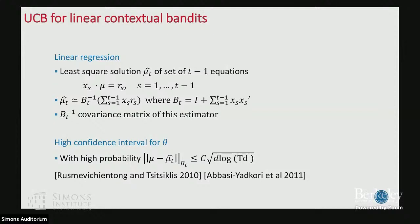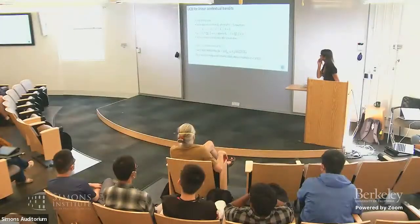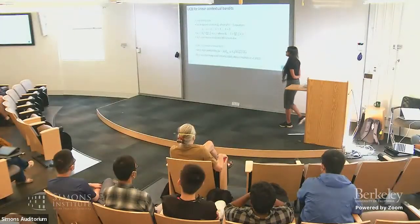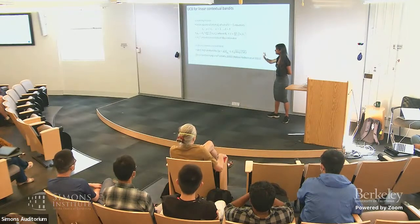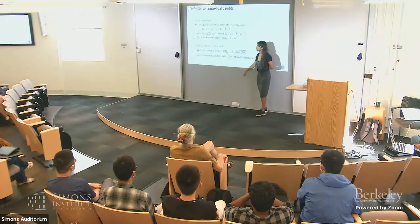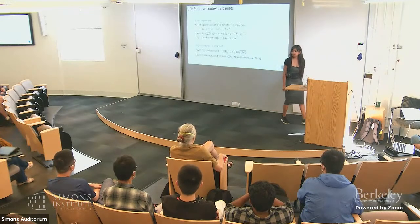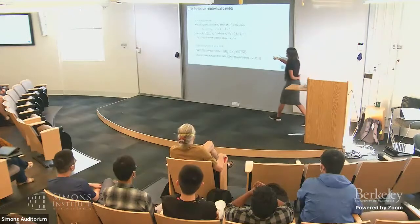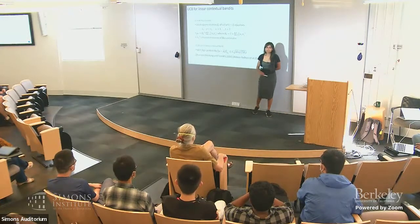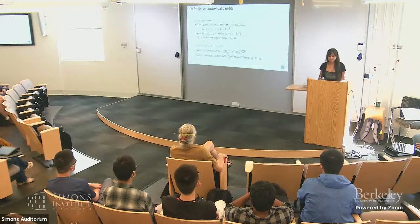The question was: why is there an identity matrix added to the summation in B? It's to make B invertible and ensure nice mathematical arguments. You can also have lambda times I and analyze the dependence on lambda, but assuming T is very large, that term doesn't matter much.